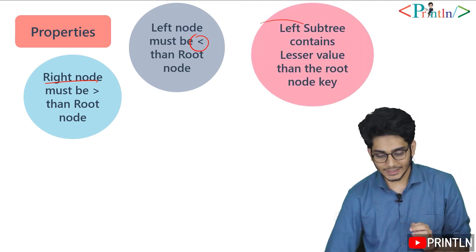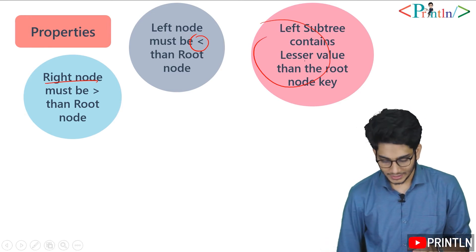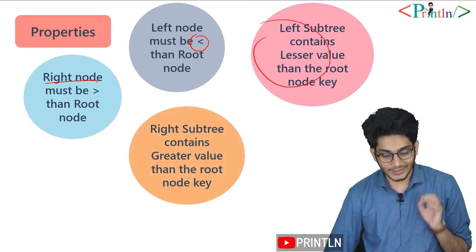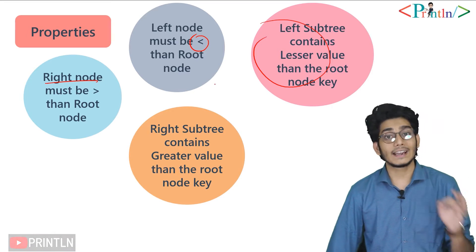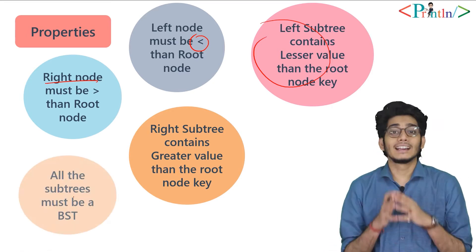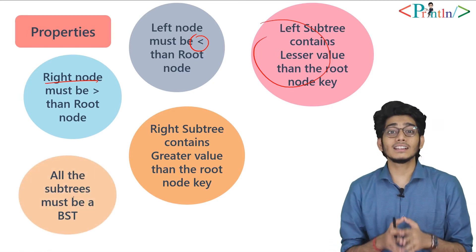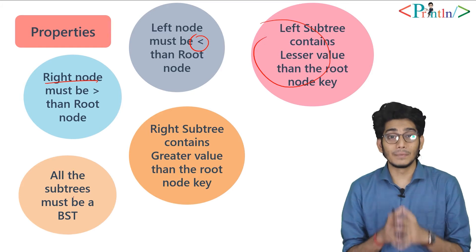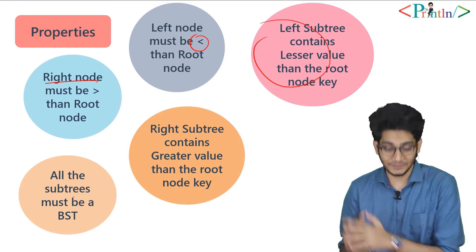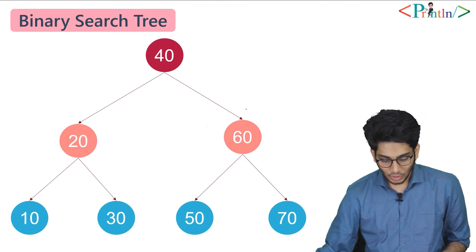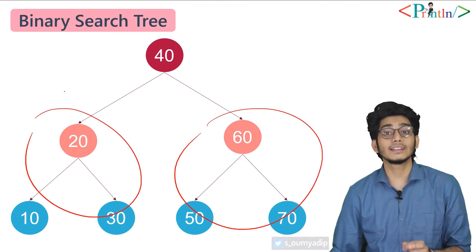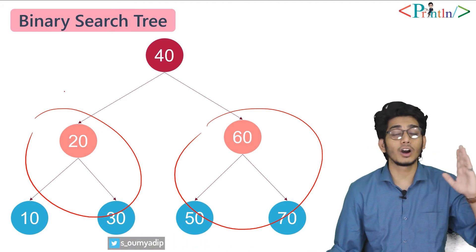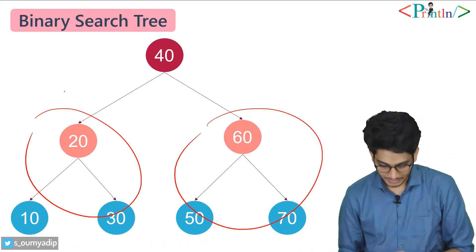The left subtree contains lesser values than the root node key. The right subtree contains greater values than the root node key. The most important point is that all subtrees must be a BST in itself. You can see that all subtrees are following the properties of BST.